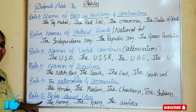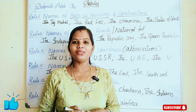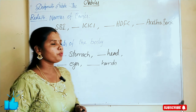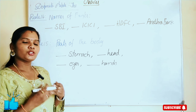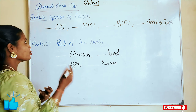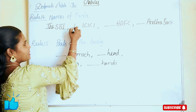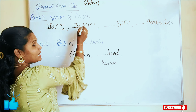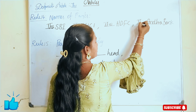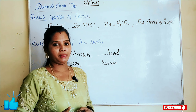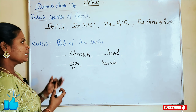Rule number 14 — names of banks. Banks also have their own identity, so before bank names we have to use the article 'the'. For example: the SBI, the ICICI, the HDFC, the Andhra Bank, the Canara Bank. Before all bank names, we have to use the article 'the'.